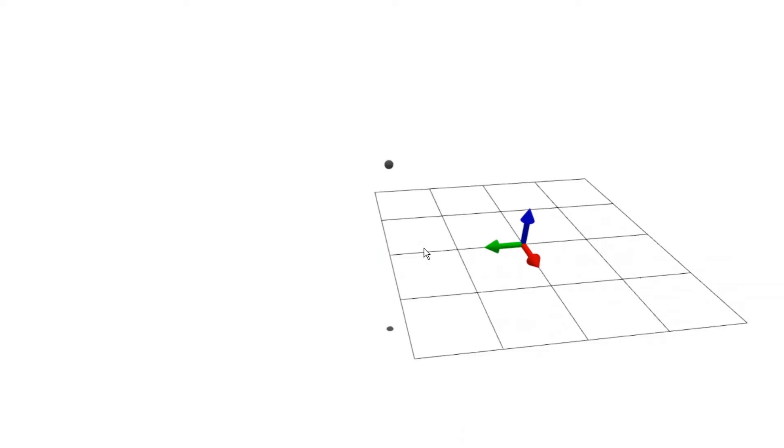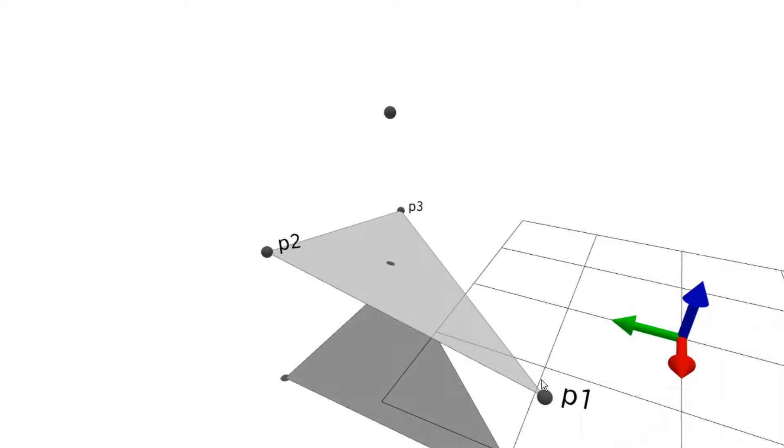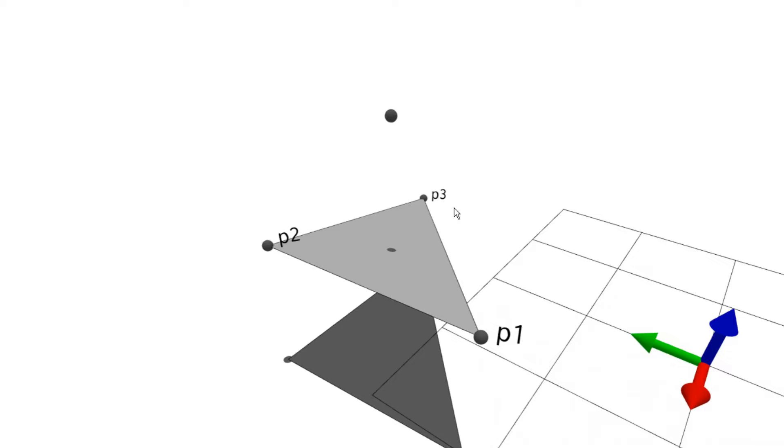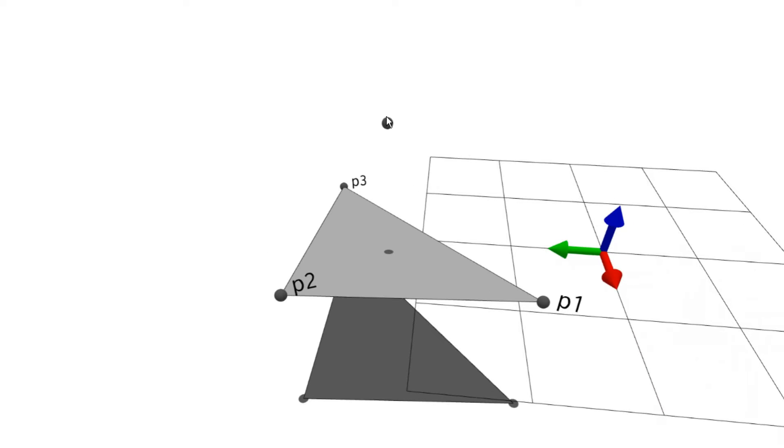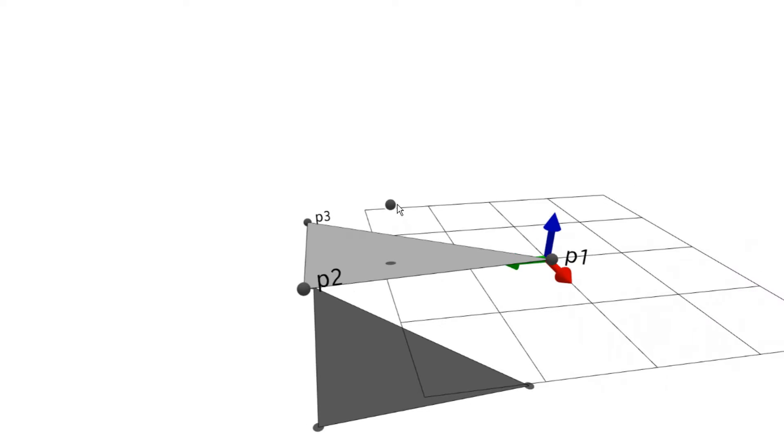We start with a point, and then we're going to define three points of a triangular plane in 3D. To determine if this point is colliding with this triangular face, we need to know the distance from the point to the plane.